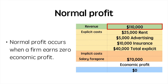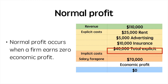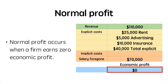Normal profit occurs when a firm earns zero economic profit, which sounds bad but could actually be considered a good thing. With revenue of $110,000 and similar explicit costs, my accounting profit is $70,000. If I subtract Sam's implicit costs of $70,000, that leaves her with zero economic profit. This just means that Sam's business is earning enough profit to match her next best alternative, which is working in a salaried position.